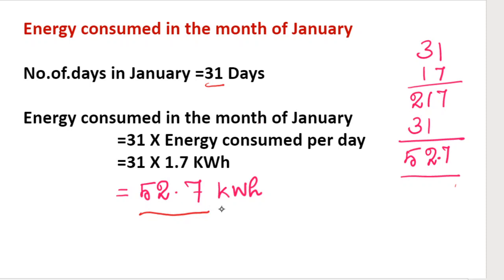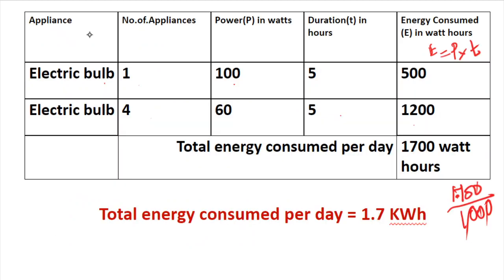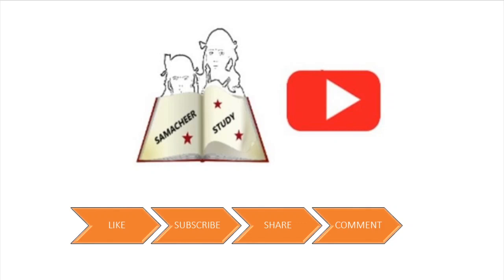The final answer: energy consumed in the month of January is 52.7 kilowatt-hours, which we also call 52.7 units. This is the practical application — you can calculate how many units are consumed in a month. This is simple when solved using the tabulation method. Hope you understand these two numerical problems. If you like this video, please subscribe and share it with your friends. Thank you so much for watching.